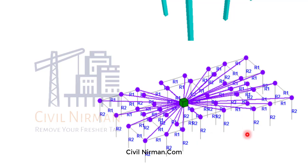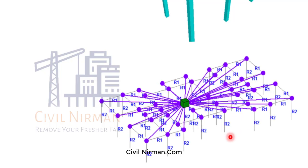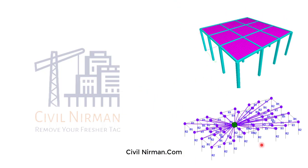If we don't provide the master-slave command — meaning if we do not model the in-plane stiffness of the slab — then force distribution will not be proper, and this can cause force concentration in some of the columns, which may result in over-design of those columns.